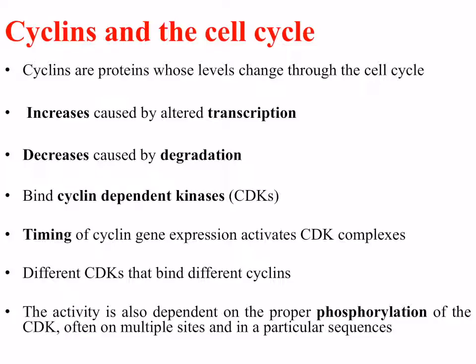Cyclin-dependent kinases are kinases which phosphorylate specific proteins, so they're enzymes. The timing of cyclin gene expression activates the cyclin-dependent kinase complexes. Different cyclin-dependent kinases bind different cyclins — there are many cyclins and many cyclin-dependent kinases. The activity is also dependent on proper phosphorylation of the cyclin-dependent kinase, often on multiple sites, and often in a particular distinct sequence.